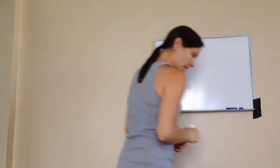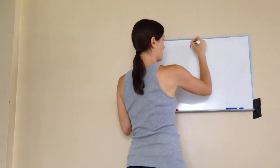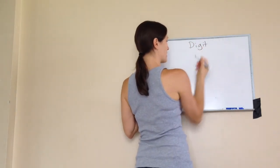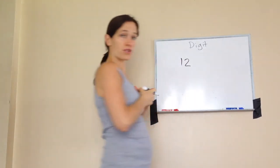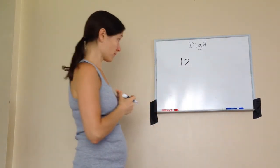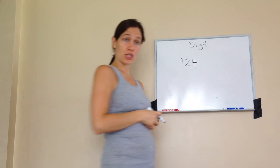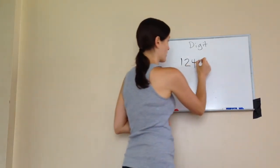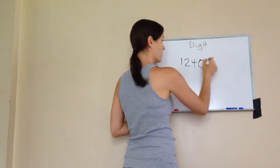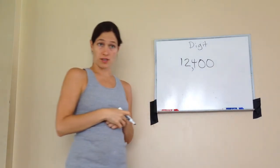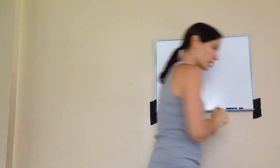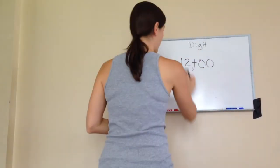All right, now let's talk about digits. All a digit is is a number. So this is a digit. Those would have two digits. This one has three digits. This one has four digits. This one has five digits. See how it works? So each number is a digit.